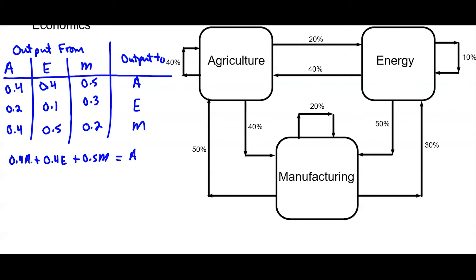Agriculture is keeping 40 percent of its own, it's getting 40 percent of energy, it's getting 50 percent of manufacturing. That's going to be its total. Now when we're looking at systems of equations we would like all the variables on the left and the constants on the right. So I'm going to subtract this A from both sides. If I take 0.4A and subtract 1A, then I'll get negative 0.6A.